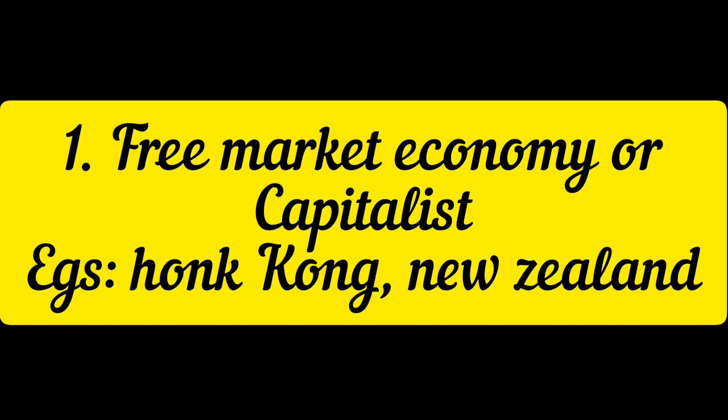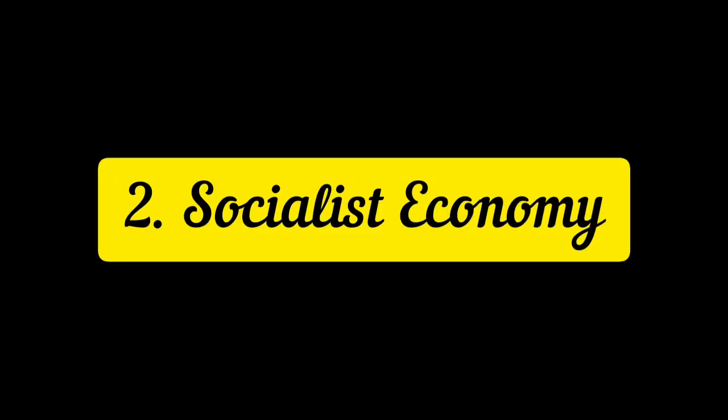A free market economy or capitalist economy is a market where all the forces of demand and supply are used to determine the prices of goods and the quantity of goods and services to be produced. There is no government role here — the government does not play any kind of role in production or consumption activities. Producers are free to choose any kind of occupation they want. Goods will be produced which are in demand, both domestically as well as in the foreign market.